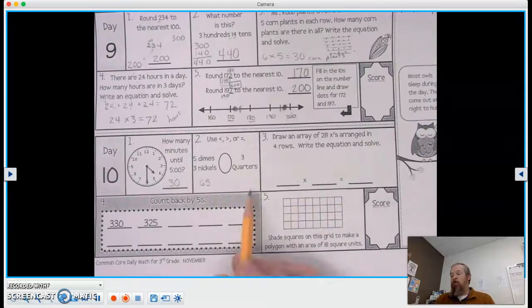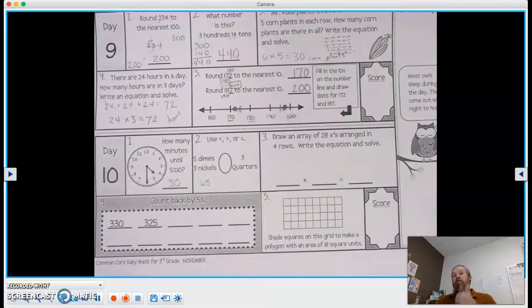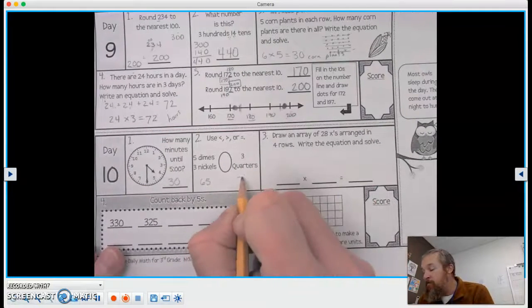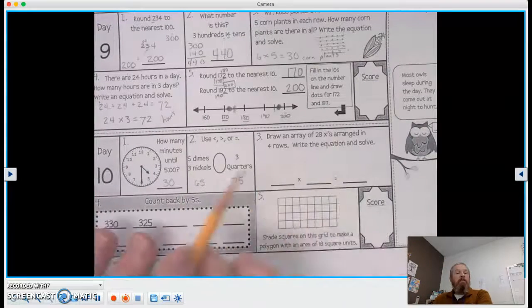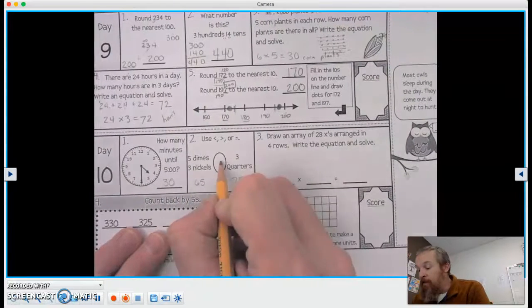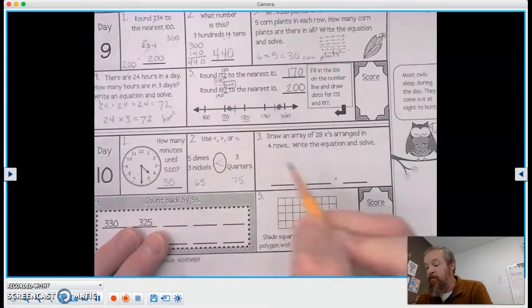And on this side, we have 3 quarters. Well, that's 25, 50, 75. So as we read this left to right, we say 65 is less than 75.